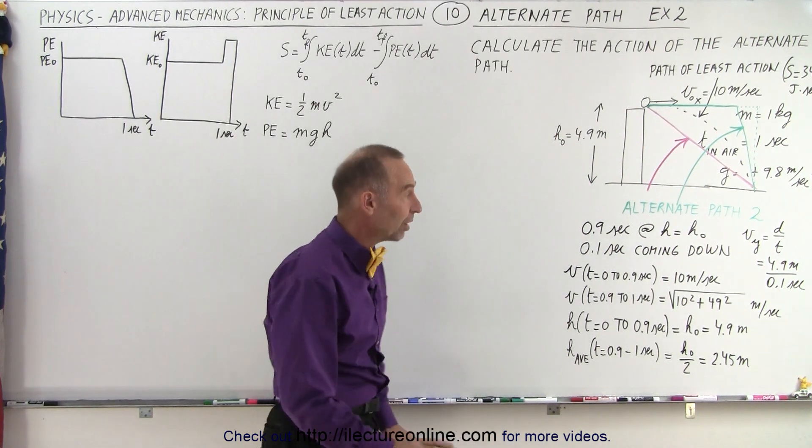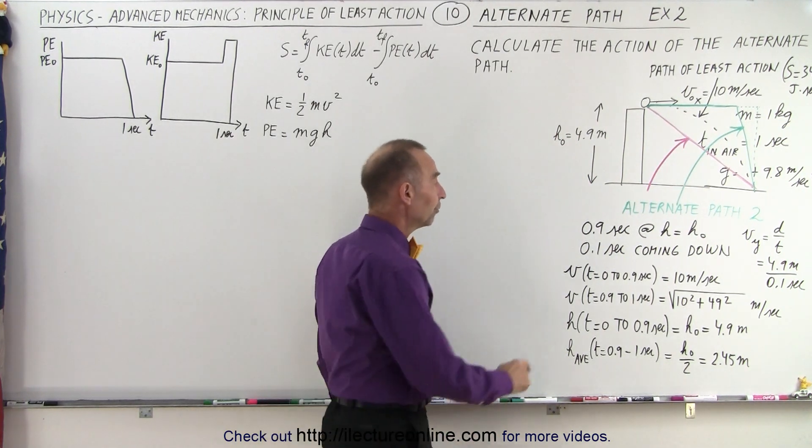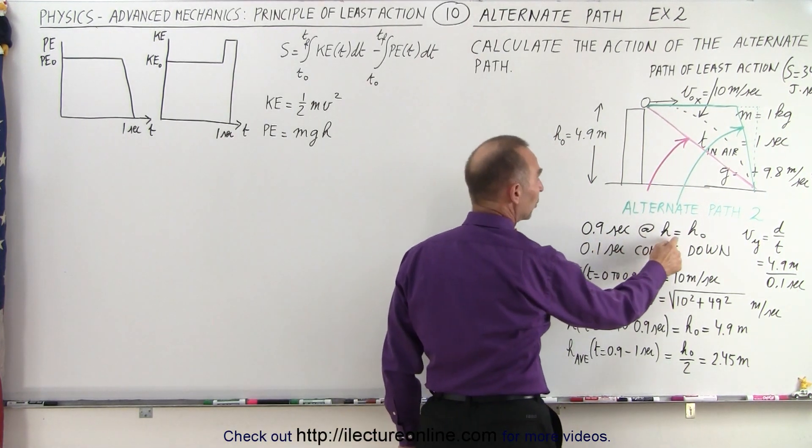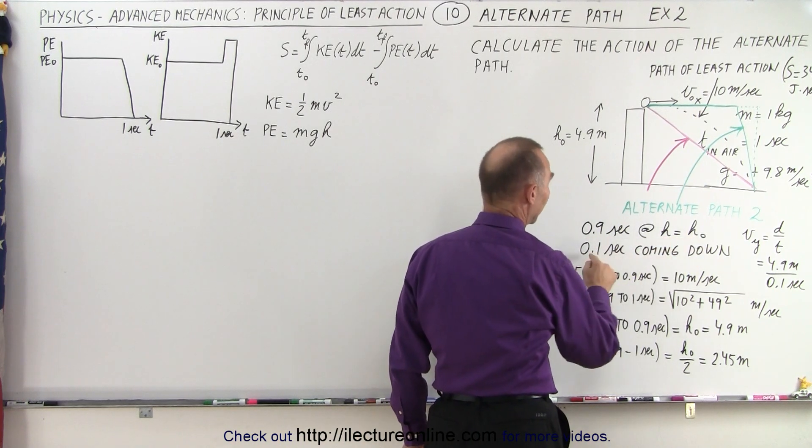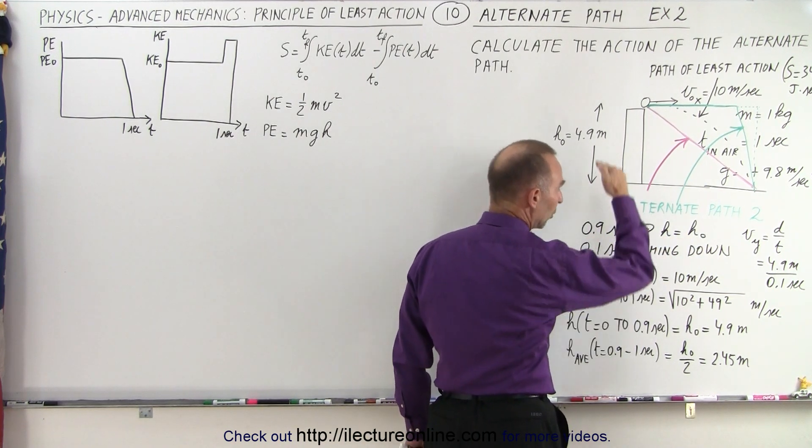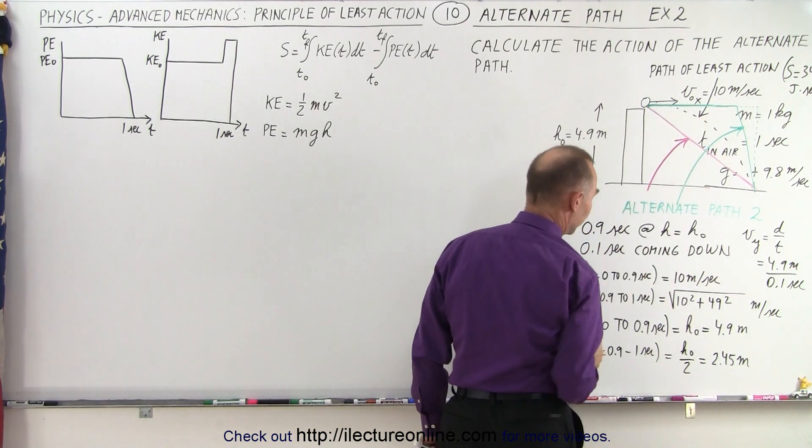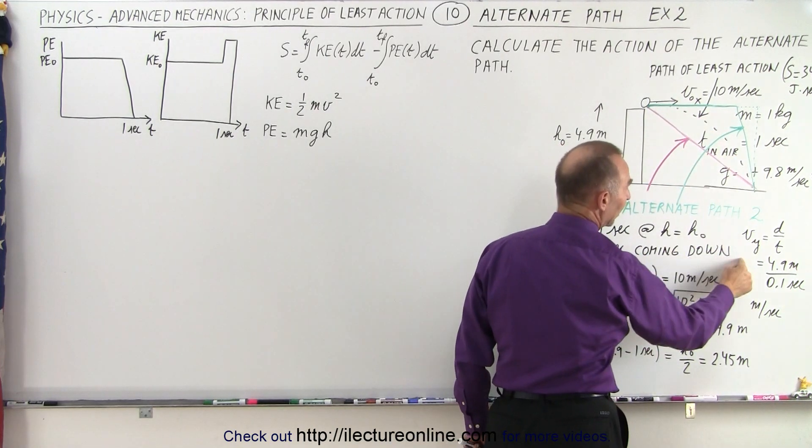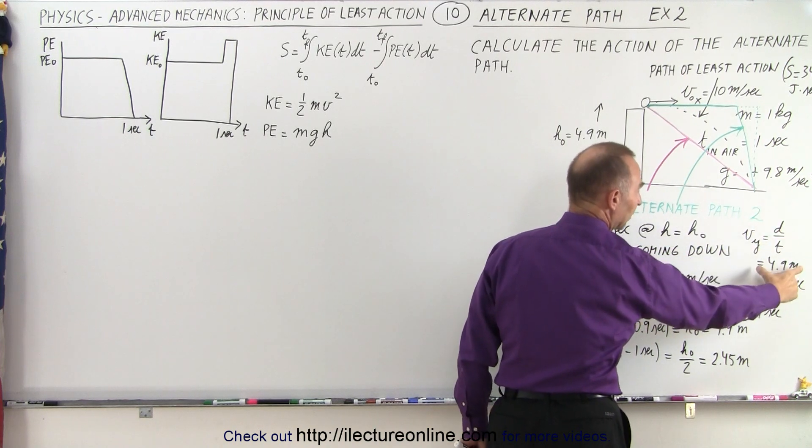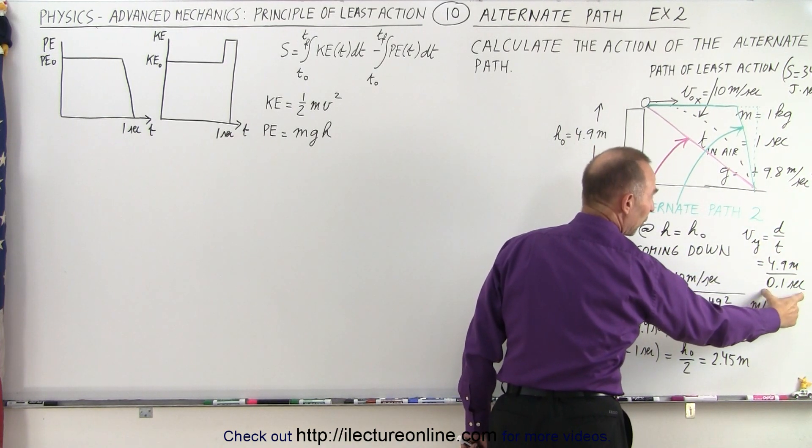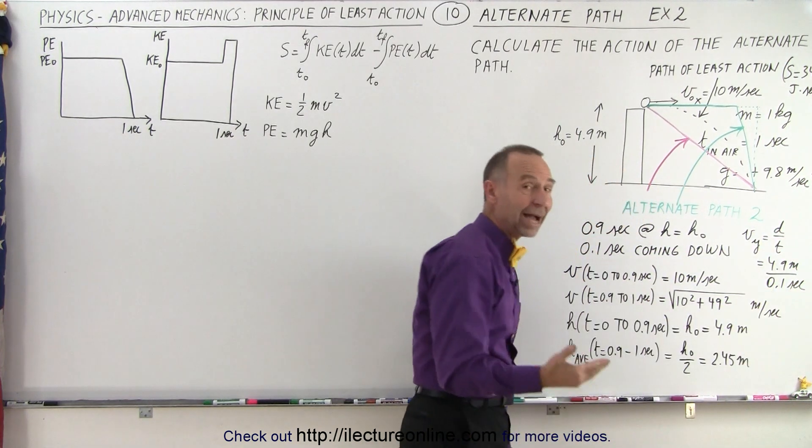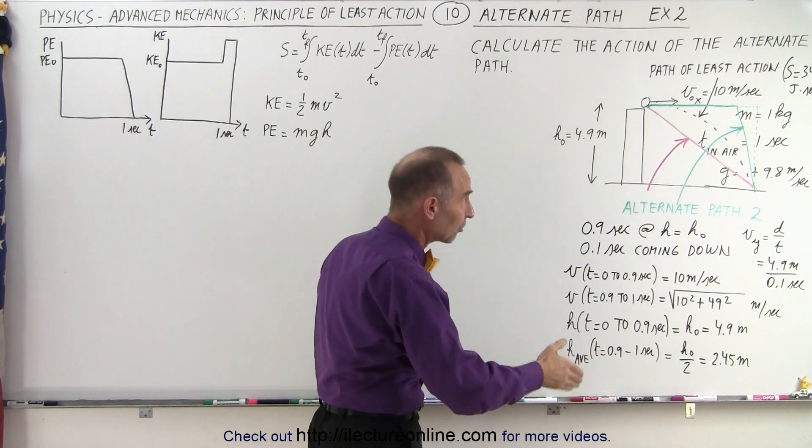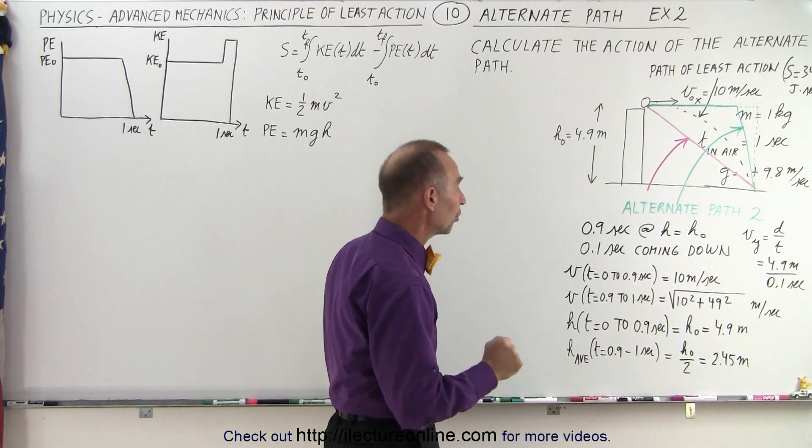How do we calculate those velocities, those heights? Well, for the first 0.9 seconds, the height will remain at h sub-naught, and then the last 0.1 second, we're coming down at that steep curve. Notice the velocity in the y direction for the last tenth of a second will be the distance over time, 4.9 meters divided by 0.1 second, that will be 49 meters per second in the vertical direction, and 10 meters per second in the horizontal direction.